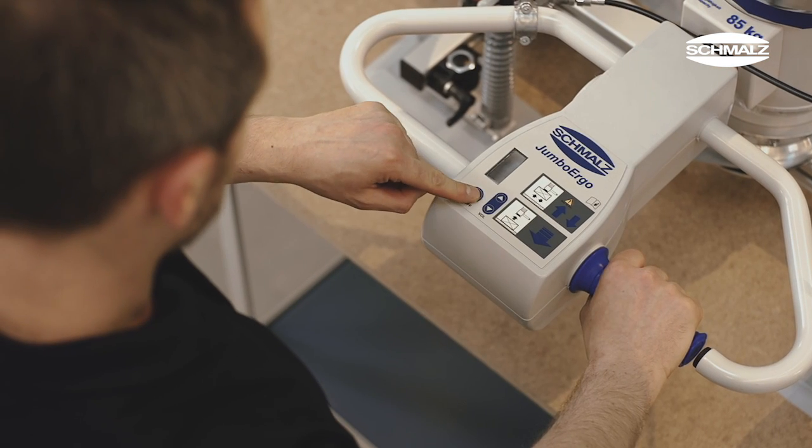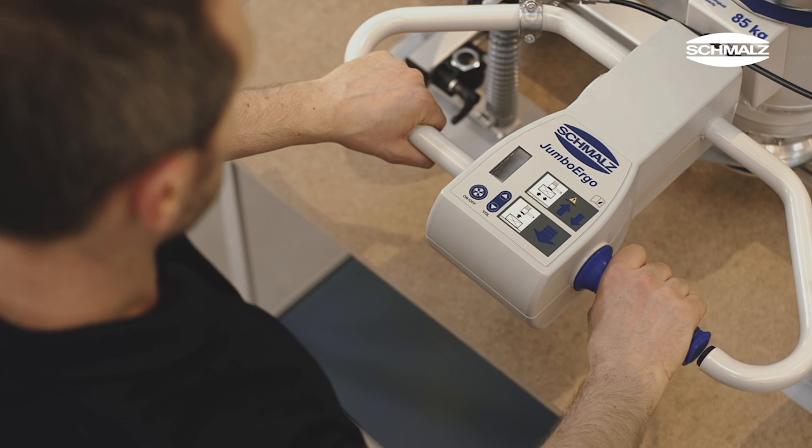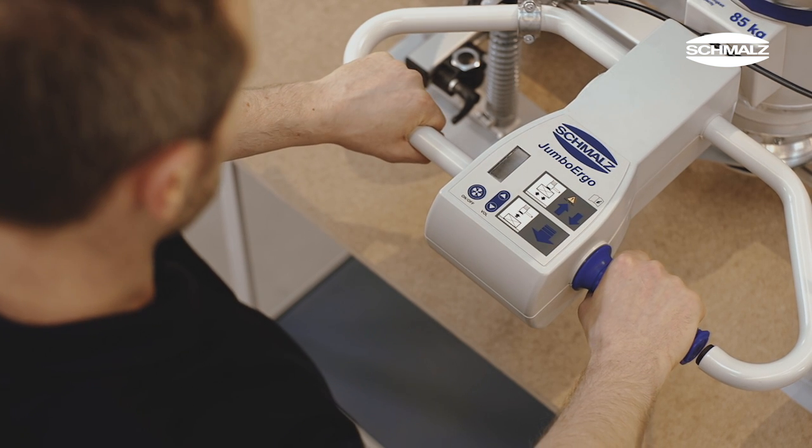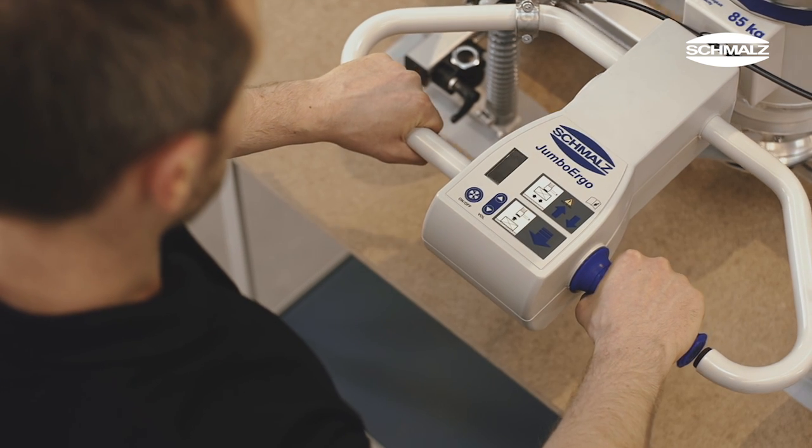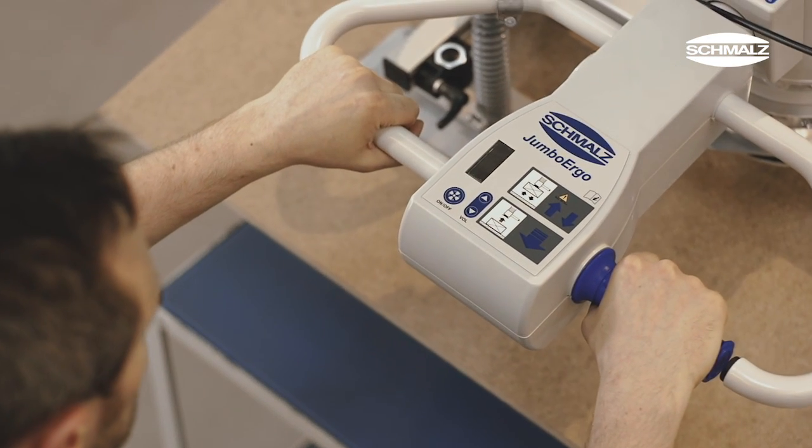The Jumbo Ergo can optionally be equipped with a radio remote control. That way, the operator can turn the vacuum generator on and off directly at the handle.